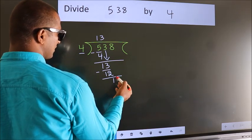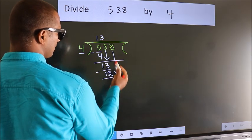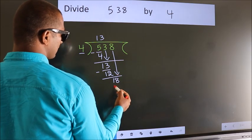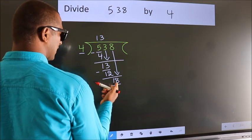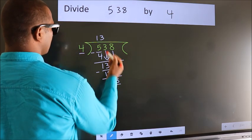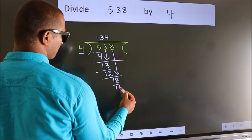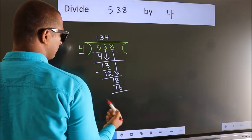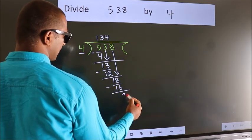After this, bring down the beside number. So 8 down, so 18. A number close to 18 in 4 table is 4 4s, 16. Now we subtract. We get 2.